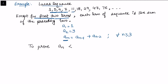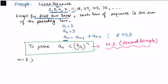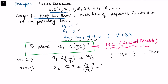We want to prove that aₙ is always strictly less than (7/4) to the power n. For n equals 1, we need a₁ strictly less than 7/4 to the power 1, which is 7/4. Since a₁ equals 1, this is true. For n equals 2, a₂ equals 3 and 7/4 squared equals 49/16, and since 49/16 is greater than 3, the result is also true for n equals 2.